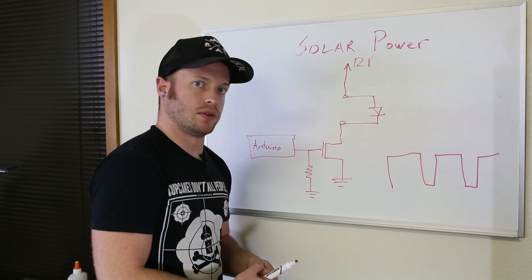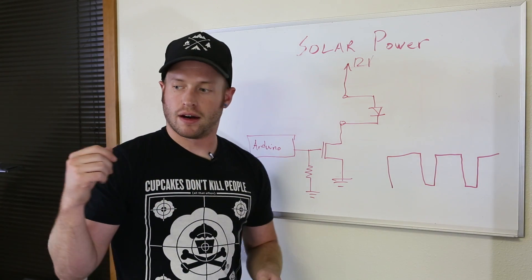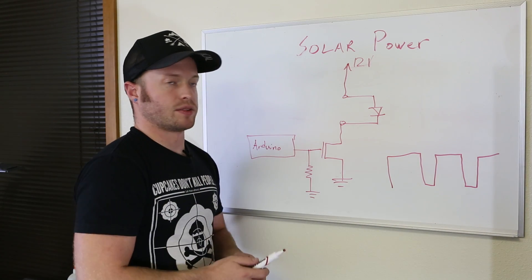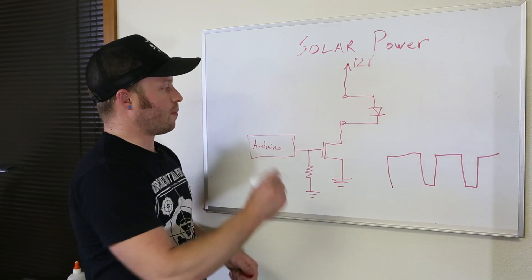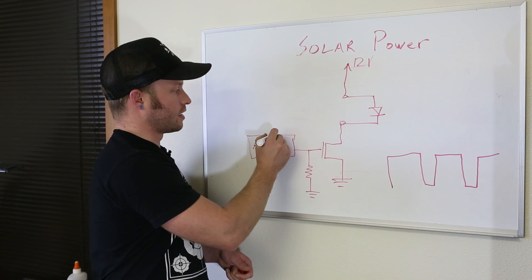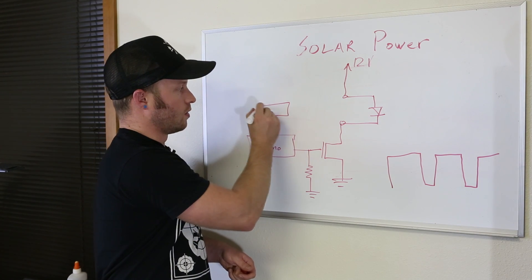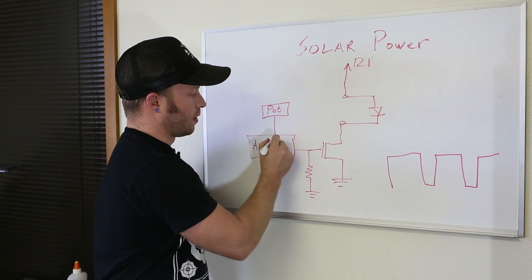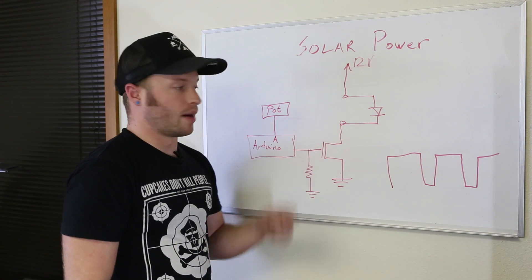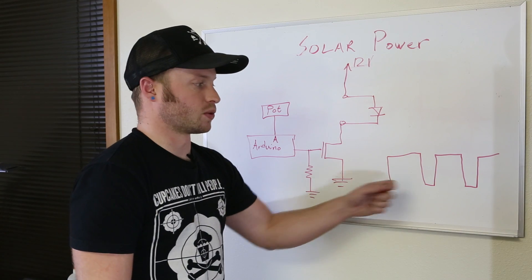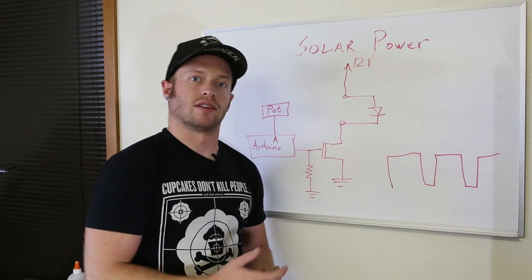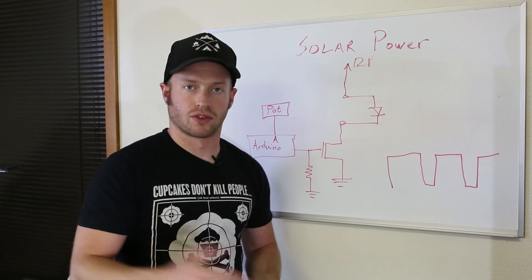I could have just hard-coded it into the Arduino pulse width modulation of 75 or 100. But what I did instead is I connected the Arduino to a potentiometer at an analog pin and I use that potentiometer to set the level of the pulse width modulation. So I can actually change the brightness of the LEDs on the fly with a knob on the controller.